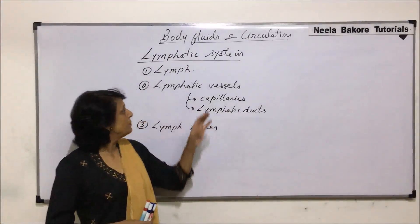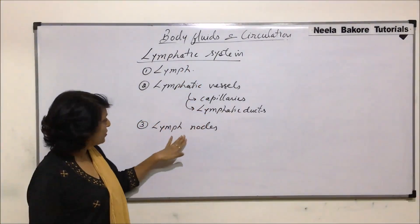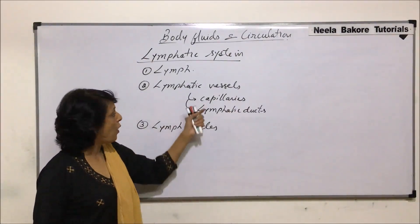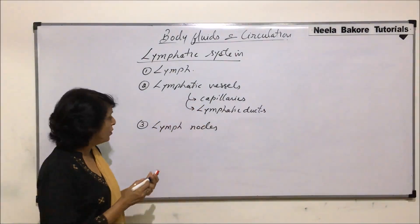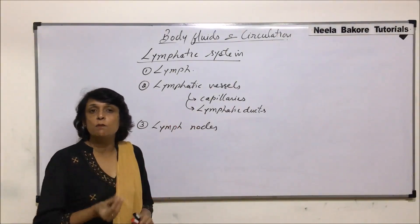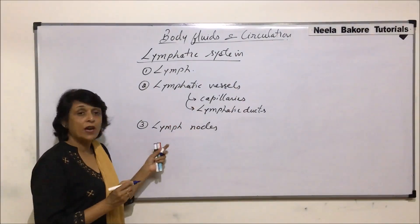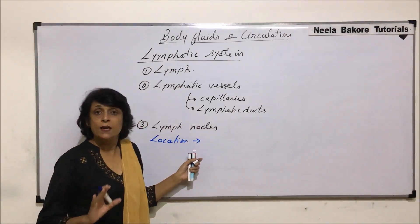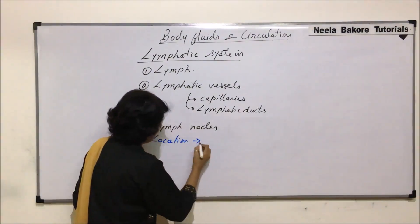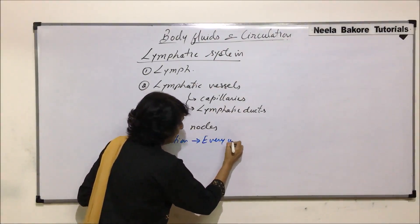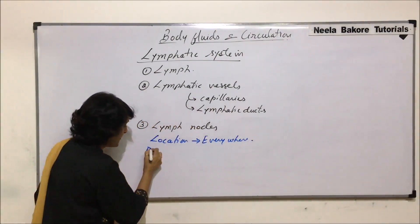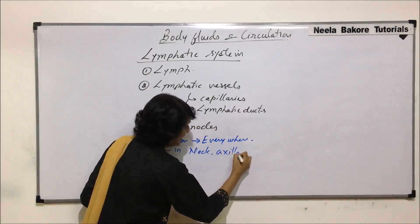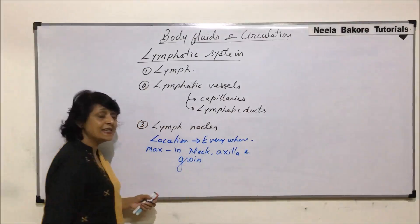In the previous segment we talked about lymph and lymphatic vessels. Now let us talk about lymph nodes. Lymph nodes are lymphoid tissues present in the path of the vessels. They are small kidney-shaped or bean-shaped structures. Lymph nodes are found everywhere in our body, but their number is maximum in the neck region, axilla, and groin.